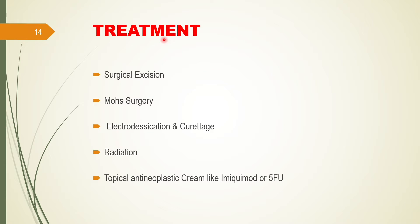Regarding treatment of basal cell carcinoma: since it is rarely metastatic and a slow-growing tumor, simple surgical excision is enough and is the treatment of choice. A modified surgical excision can be done in the form of Mohs surgery, where the tumor cell is removed, then a thin layer of tissue is removed and visualized under microscope to check for cancer cells. Electrodesiccation and curettage is also a mode of treatment. Radiation can be given, and topical anti-neoplastic creams such as imiquimod and 5-fluorouracil can be prescribed. But the base treatment is surgical excision.